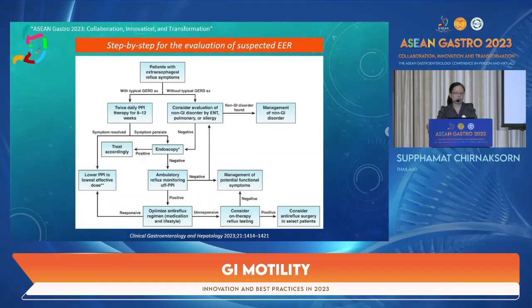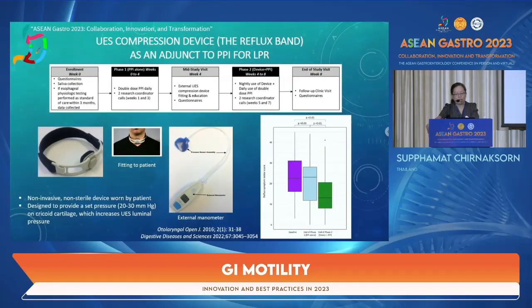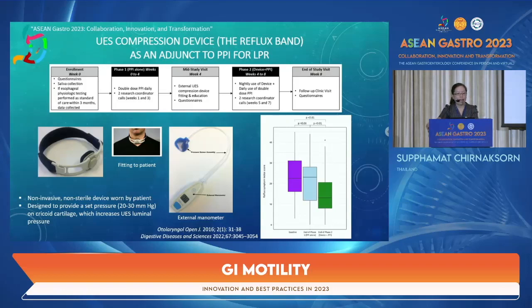If pH monitoring is positive, optimize anti-reflux regimen including medication and lifestyle modification, and consider on-therapy reflux testing if symptoms persist, with possible anti-reflux surgery in selected patients. An alternative therapy mentioned is the UES compression device, or Reflux Band — a non-invasive device that applies pressure on the cricoid cartilage to increase UES luminal pressure. Used as an adjunct to PPI for laryngopharyngeal reflux, the reflux symptom index improves when combining the band with PPI.